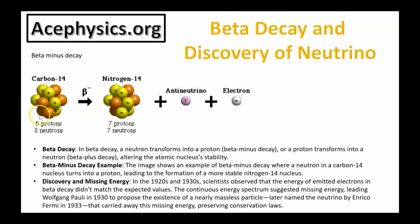This is carbon-14; one of the neutrons turns into a proton and you get a more stable nucleus. In the 1920s and 1930s, scientists observed that the energy of emitted electrons in beta decay didn't match the expected values — there was some missing energy. Enrico Fermi suggested that there was an elusive particle that was difficult to detect. He called it the neutrino, and this particle has since been detected.